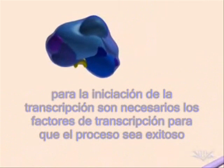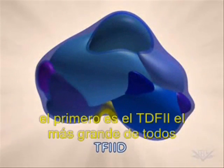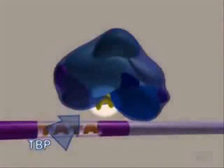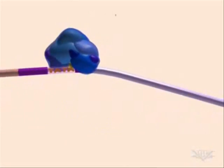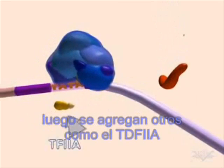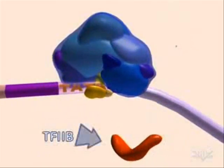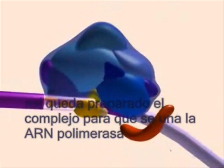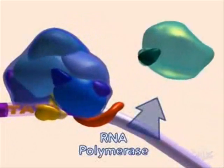Several complexes, known as transcription factors, are required for successful transcription. The first is TF2D, the largest of the general factors. A component of this factor, TBP, binds to the DNA using the TATA box to position TF2D near the transcription initiation site. Other transcription factors, including TF2A and TF2B, then attach. These complexes prepare the DNA for the successful binding of RNA polymerase.